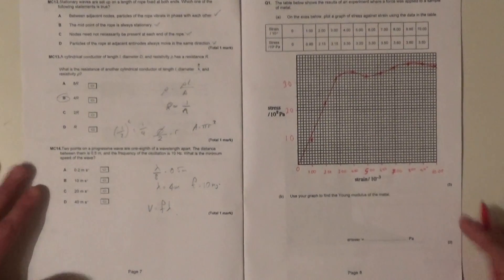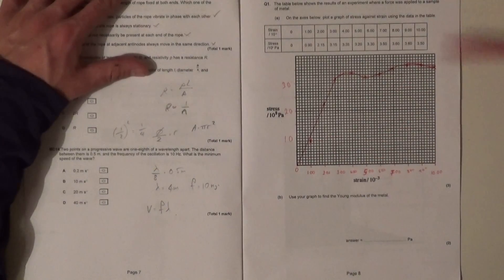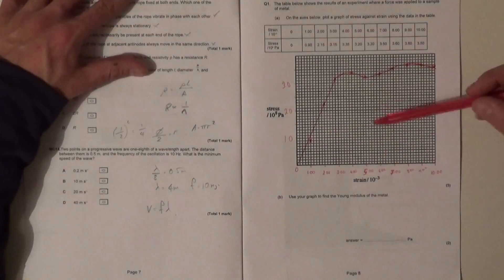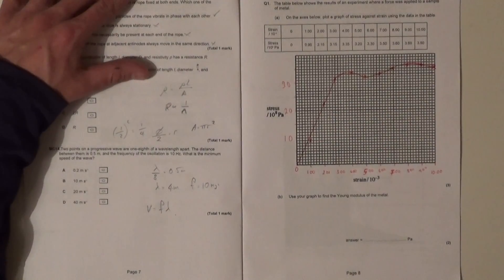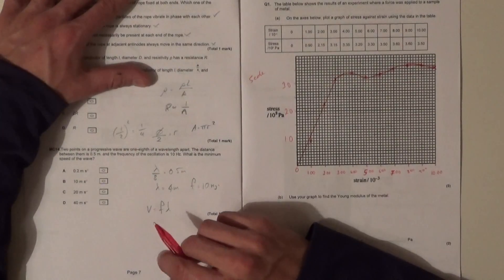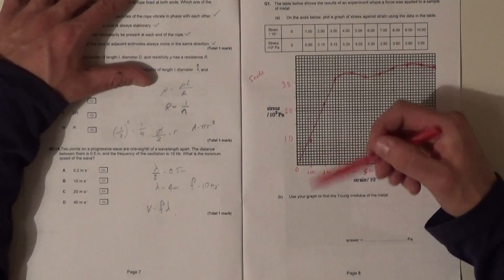Okay guys, question number one mark scheme. Basically you've got to plot the points, it's very straightforward. Things to look out for: most people can do this. The first mark was for scales, so you had to have a good scale on both axes and using up more than half the space.